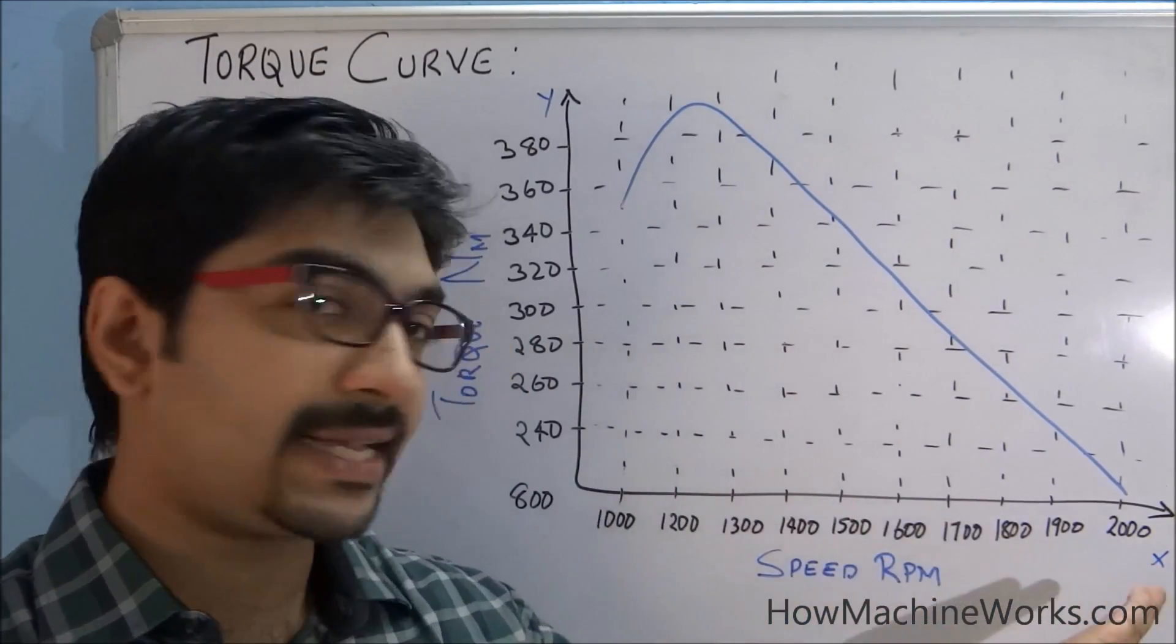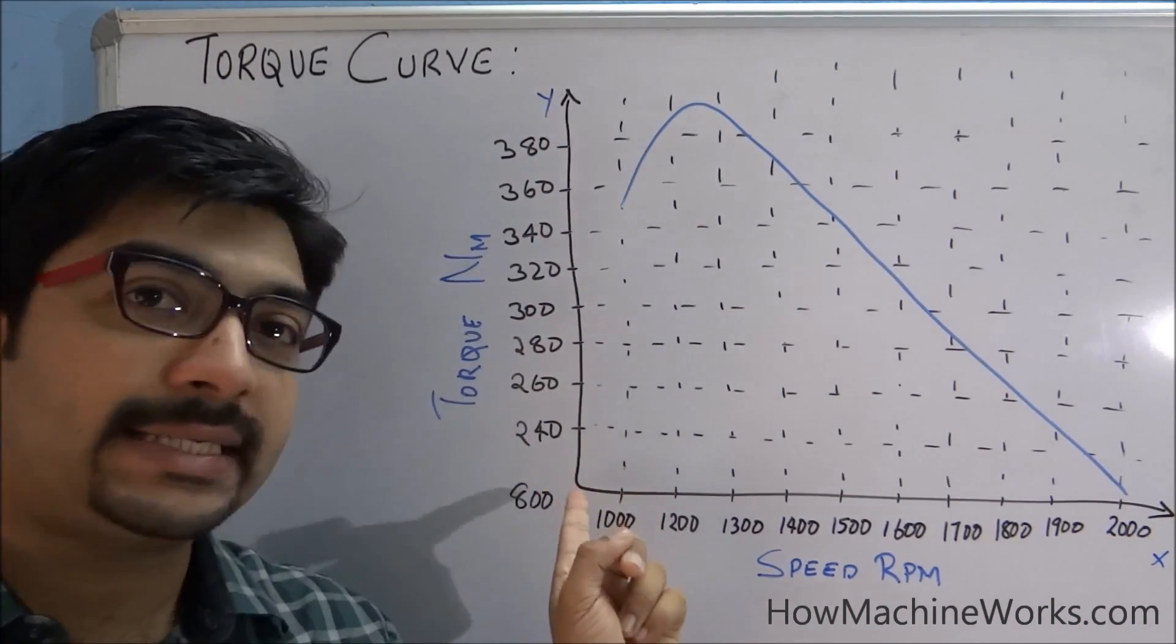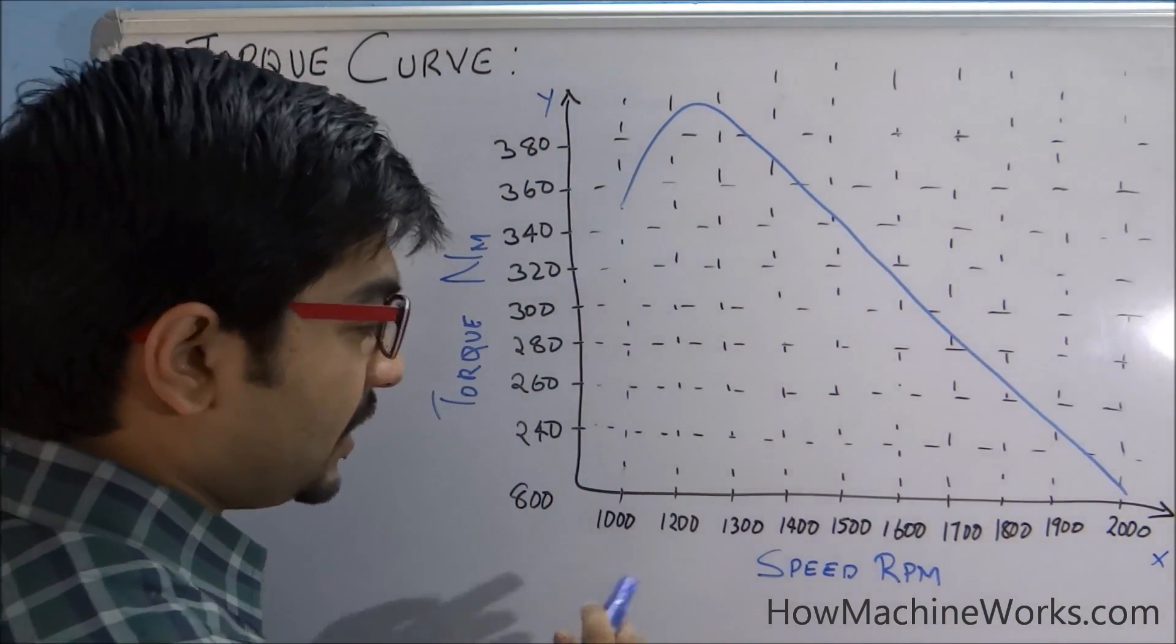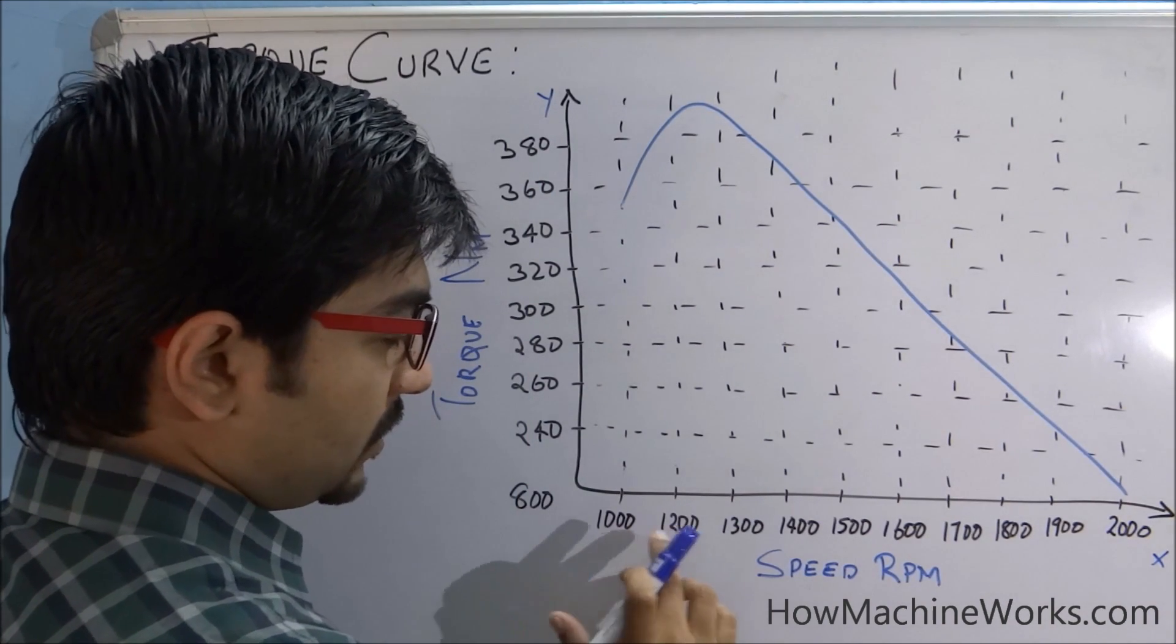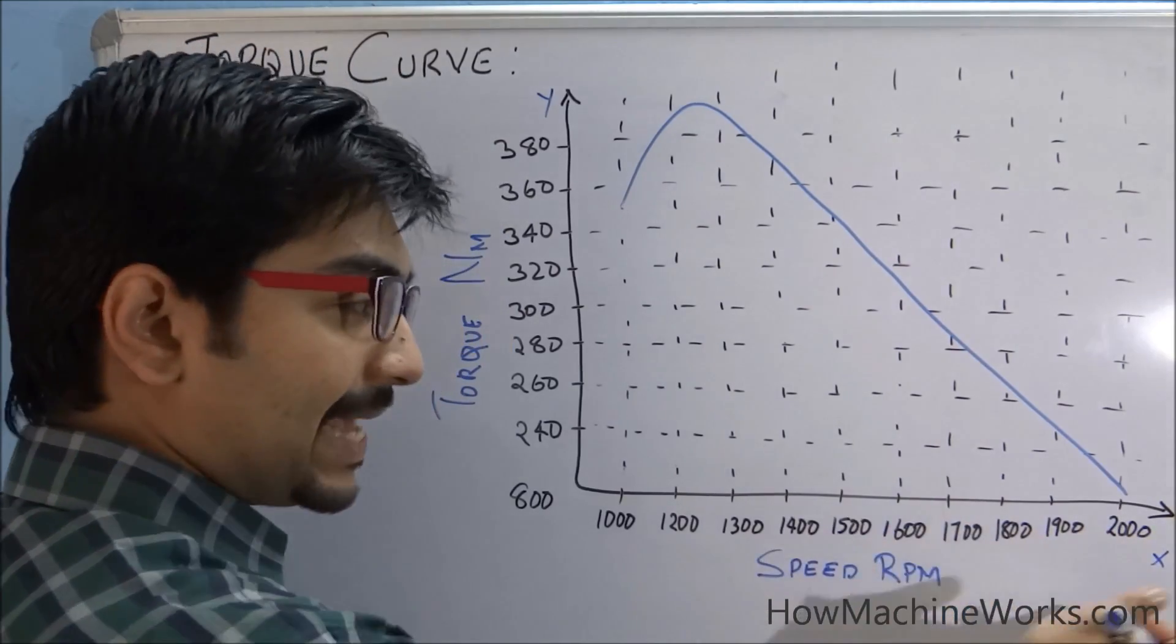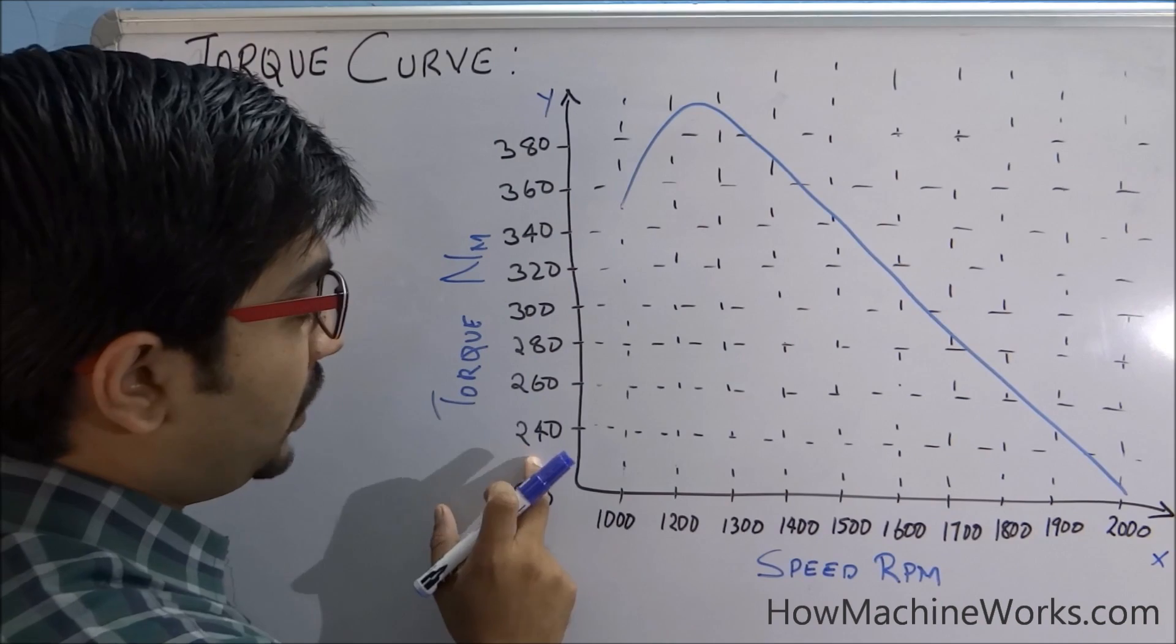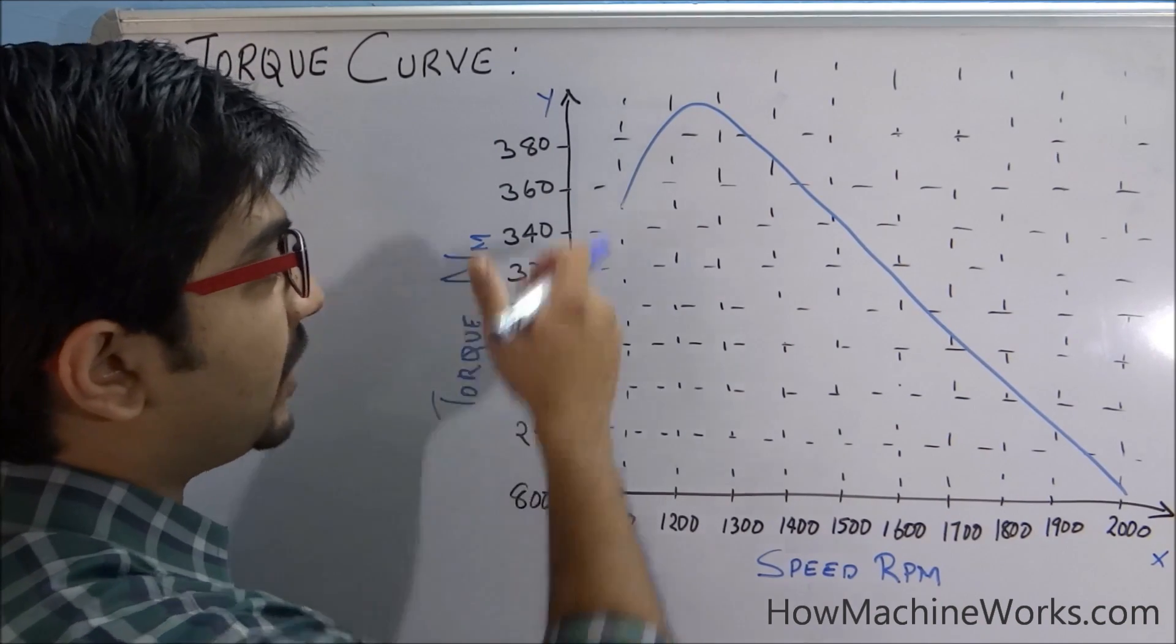...and we have torque which is Newton meter in the y-axis. So if you see, you can see the RPM is increasing like 1000, 1200, 1300, 1400, 1500, etc. in the x-axis. And in the y-axis, torque is increasing as 240, 260, 280, 300, etc.